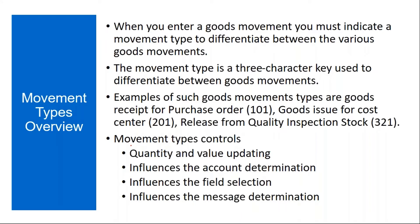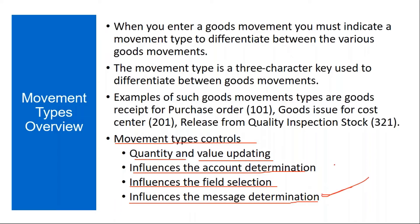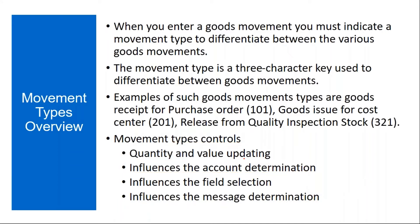The movement type controls quantity and value updating, influences account determination, influences the field selection on the MIGO screen determining which fields become mandatory, and influences message/output determination. Movement type controls all these functions. For Good Receipt, movement types normally start with 1 — there are some exceptions, but normally all GR movement types start with 1.